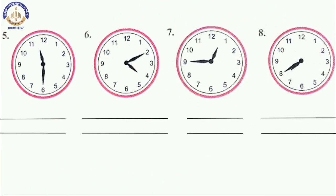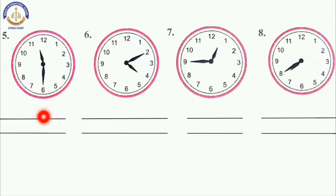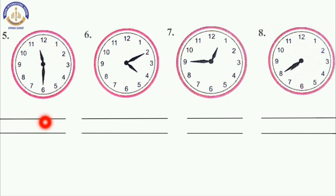Number 5: here the minute hand is on 6. When the minute hand is on 6, the time is half an hour, that means 30 minutes. And the hour hand is between 11 and 12. So our time is 11:30, or half past 11. Write this.